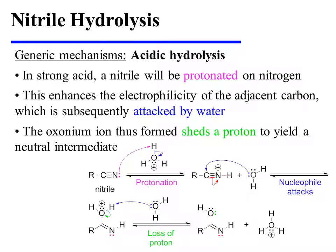In strong acid, the nitrile will first be protonated on nitrogen. This enhances the electrophilicity of the adjacent carbon, which is subsequently attacked by water, pushing a pi-bonding pair of electrons onto nitrogen as a result.